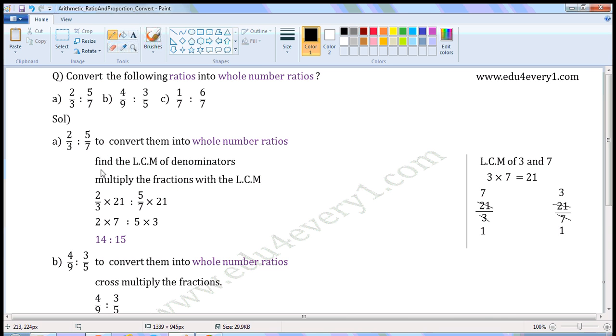So multiply antecedent and consequent with the LCM: 2/3 × 21 is to 5/7 × 21. When the LCM is multiplied on both sides, there is no change in the value of the ratio. So simplify it.